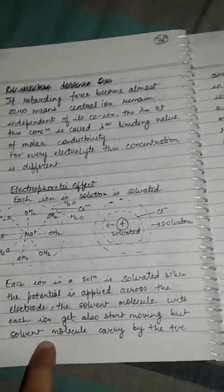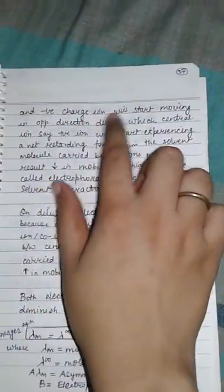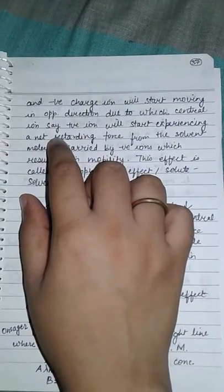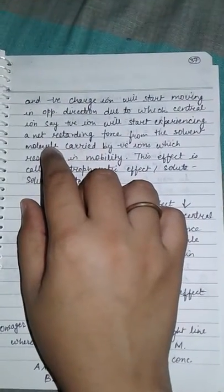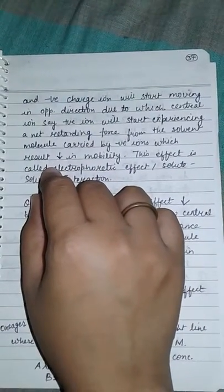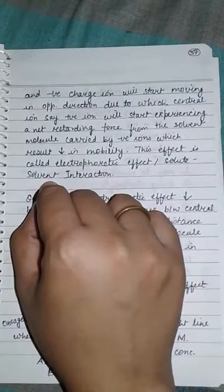But the solvent molecule carried by the positive charge and negative charge will start moving in opposite direction, due to which the central ions, positive and negative, will start experiencing a net retarding force from the solvent molecule carried by negative ions, which results in decrease in mobility. This effect is called electrophoretic effect.